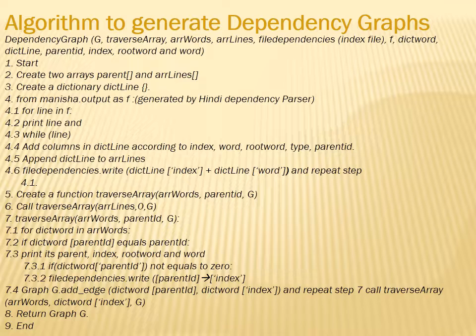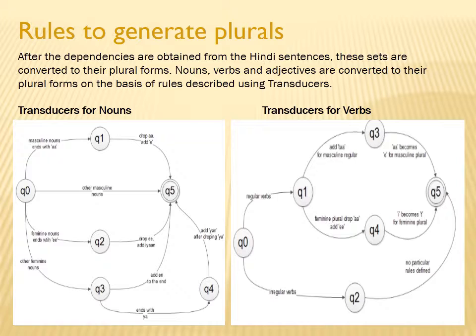Next is the algorithm. There is an algorithm which is used to generate the dependency graph from the dependency data set. This is the algorithm used in generating the dependency graph. After getting all the dependencies, it is required to convert the singular form to their plural forms.